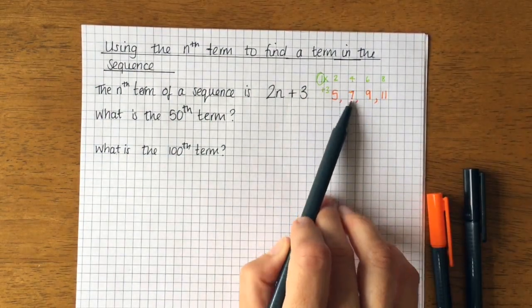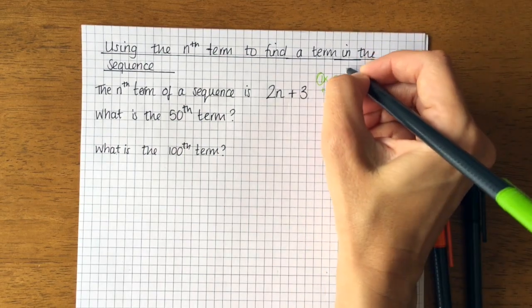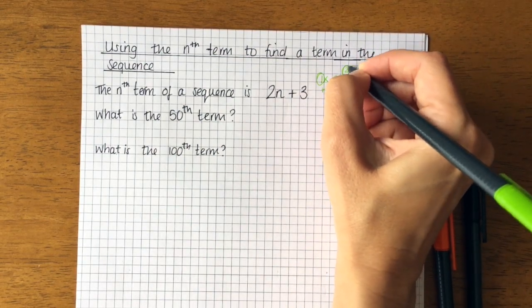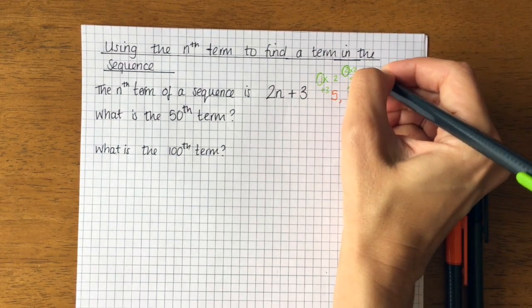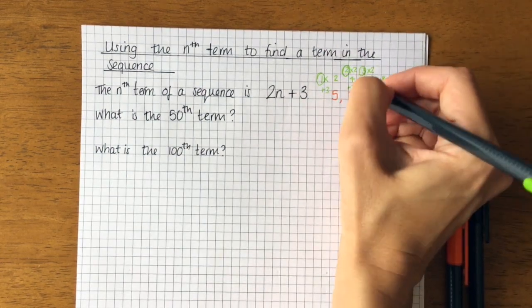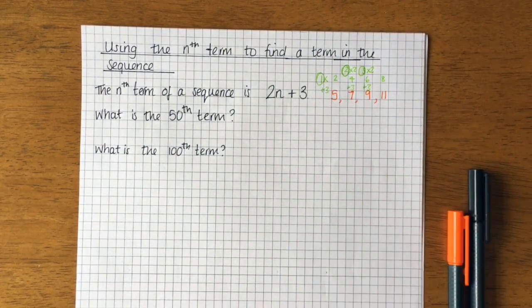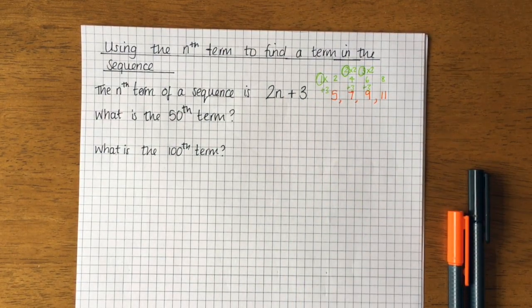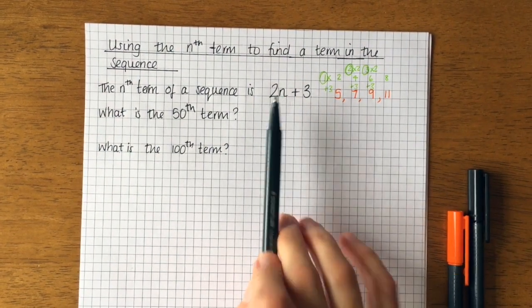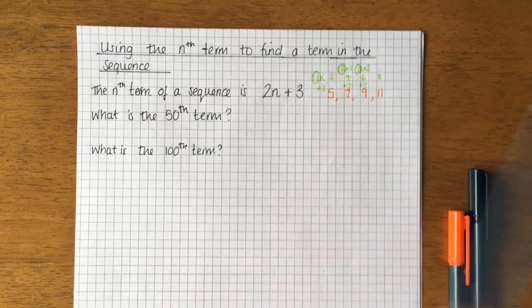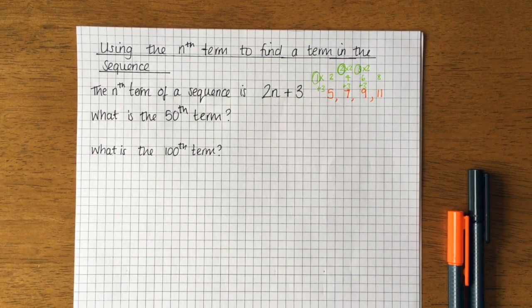For the second term in the sequence, I did 2 times 2, and then I added 3. So that was for the second term. For the third term, I did 3 times 2. So to find the first term of a sequence, I would replace n here with 1. To find the second, I would replace it with 2. For the third, I would replace it for 3, and so on.